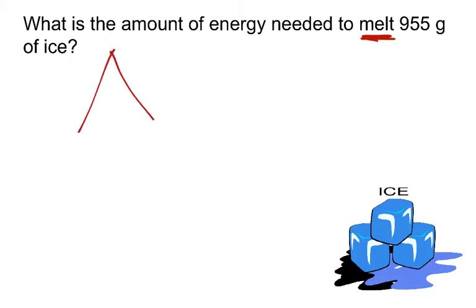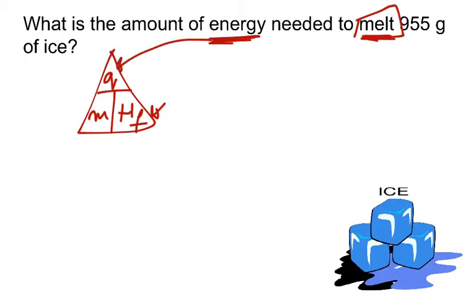But we will simply use Q is equal to MHF. Now, how do we know to use Q equals MHF, because of this keyword right here, melting. So if we saw melting or freezing, we will use our H of F. And since it's asking how much energy, and we know energy is in joules, and we know Q stands for energy, we will have to find Q, Q is our unknown.